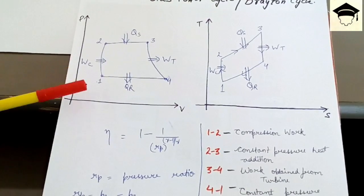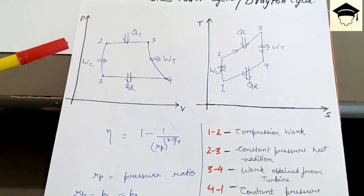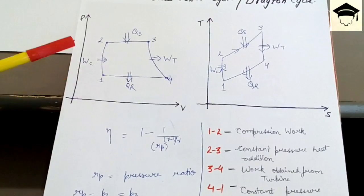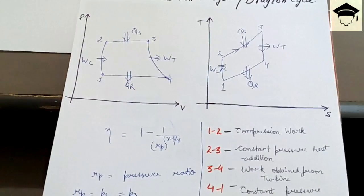So the various processes are from one to two it is isentropic compression in the compressor from one to two. So we have to do the work.